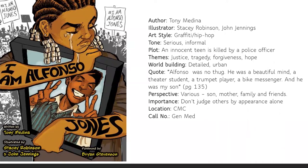The plot is about an innocent teen killed by a police officer. Themes are justice, tragedy, forgiveness, and hope — at the end there's definitely resolution, and it's really beautiful how it all ends up. You might cry, I did. The world building is very detailed and urban — there's a graffiti-style, gritty black-and-white feel of the city that looks so cool. There are also lots of panel-breaking moments that are very in-your-face. A touching quote is from Alfonso's mother: 'Alfonso was no thug. He was a beautiful mind and a theater student, a trumpet player, a bike messenger, and he was my son.' This shows the perspective of the mother and the family — the biggest challenge is realizing you can't judge people by their appearance. This book can be found at the CMC.